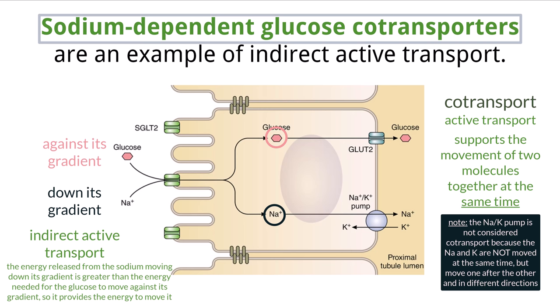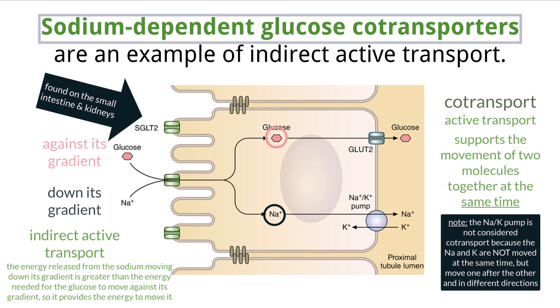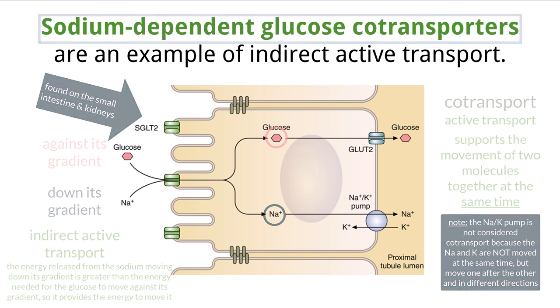This co-transporter is found within the tissue of the small intestine and the kidneys. The small intestine absorbs glucose from the food we consume, and the nephron reabsorbs any glucose found in the filtering process so that it is not lost as waste into our urine. We'll discuss both of these concepts in more detail in other videos.